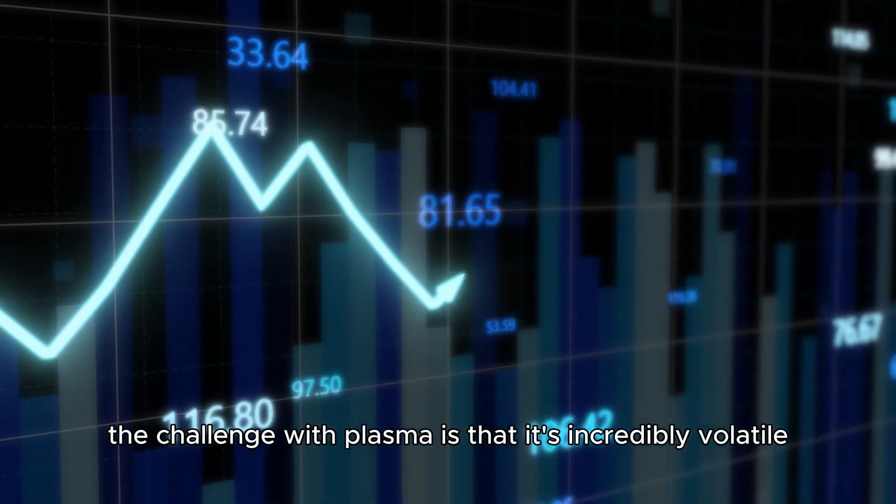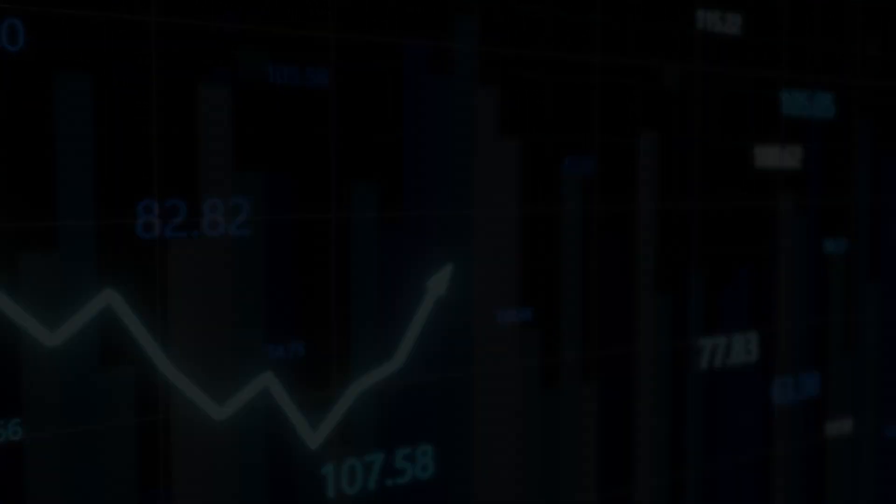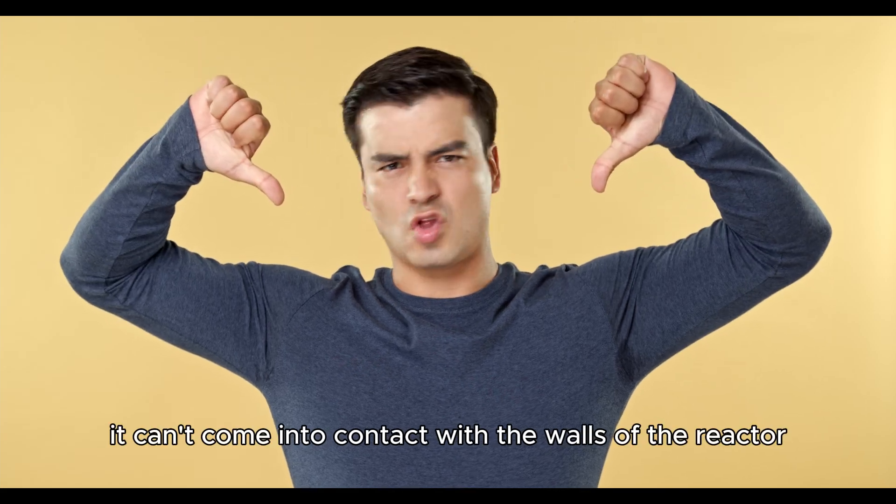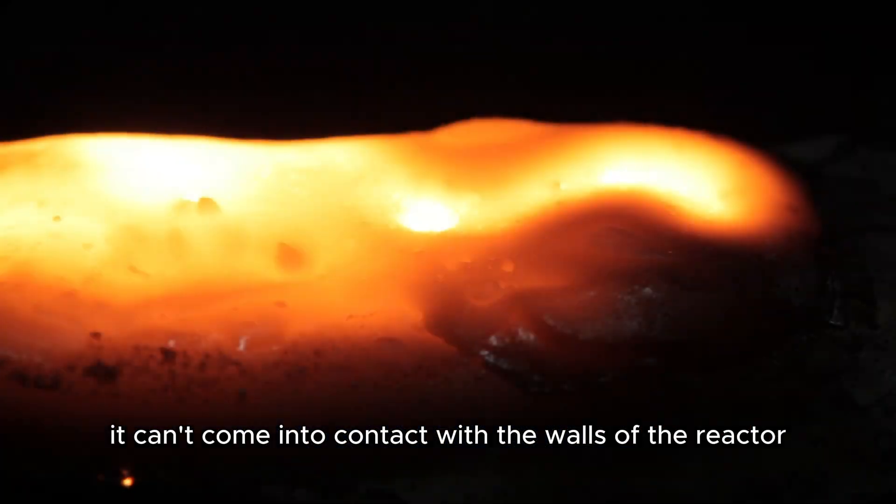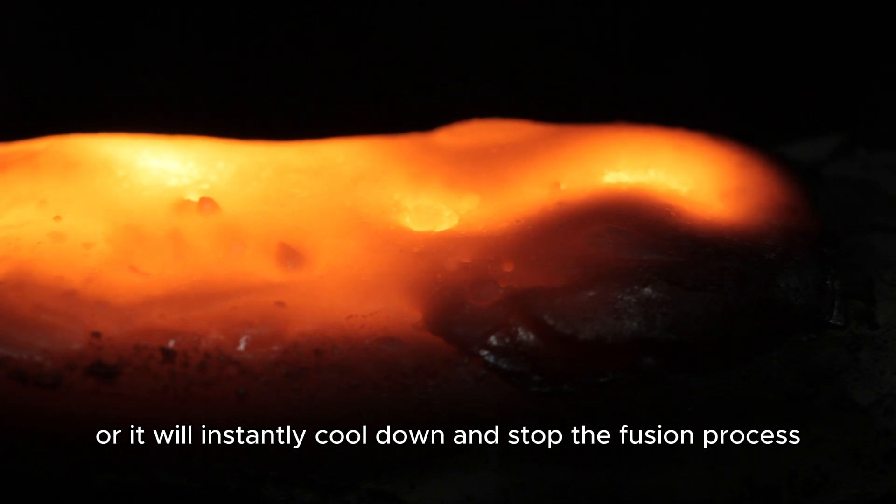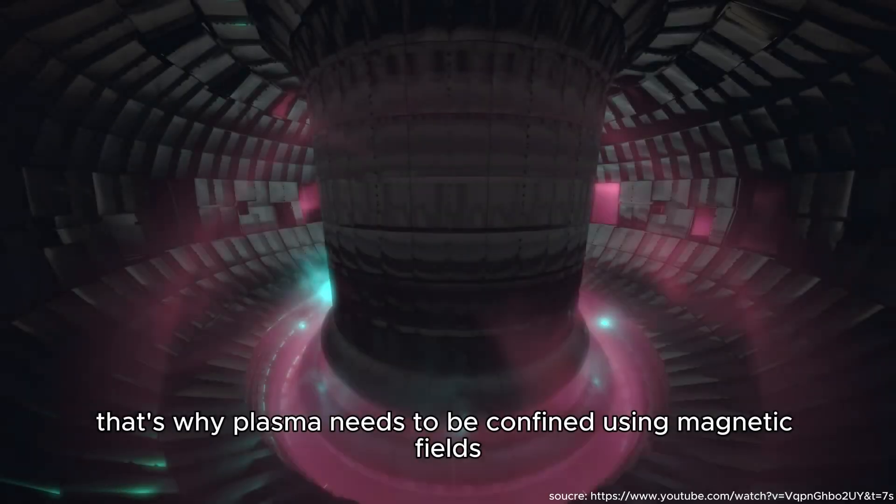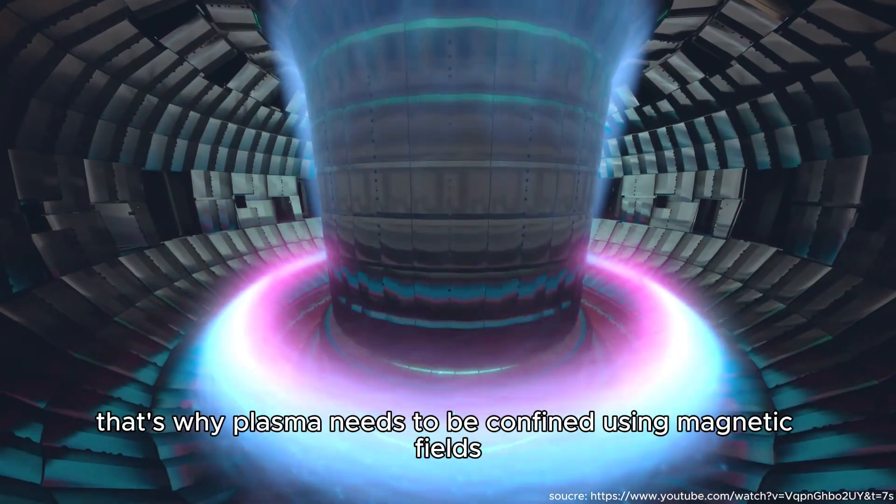The challenge with plasma is that it's incredibly volatile. At these temperatures, it can't come into contact with the walls of the reactor, or it will instantly cool down and stop the fusion process. That's why plasma needs to be confined using magnetic fields.